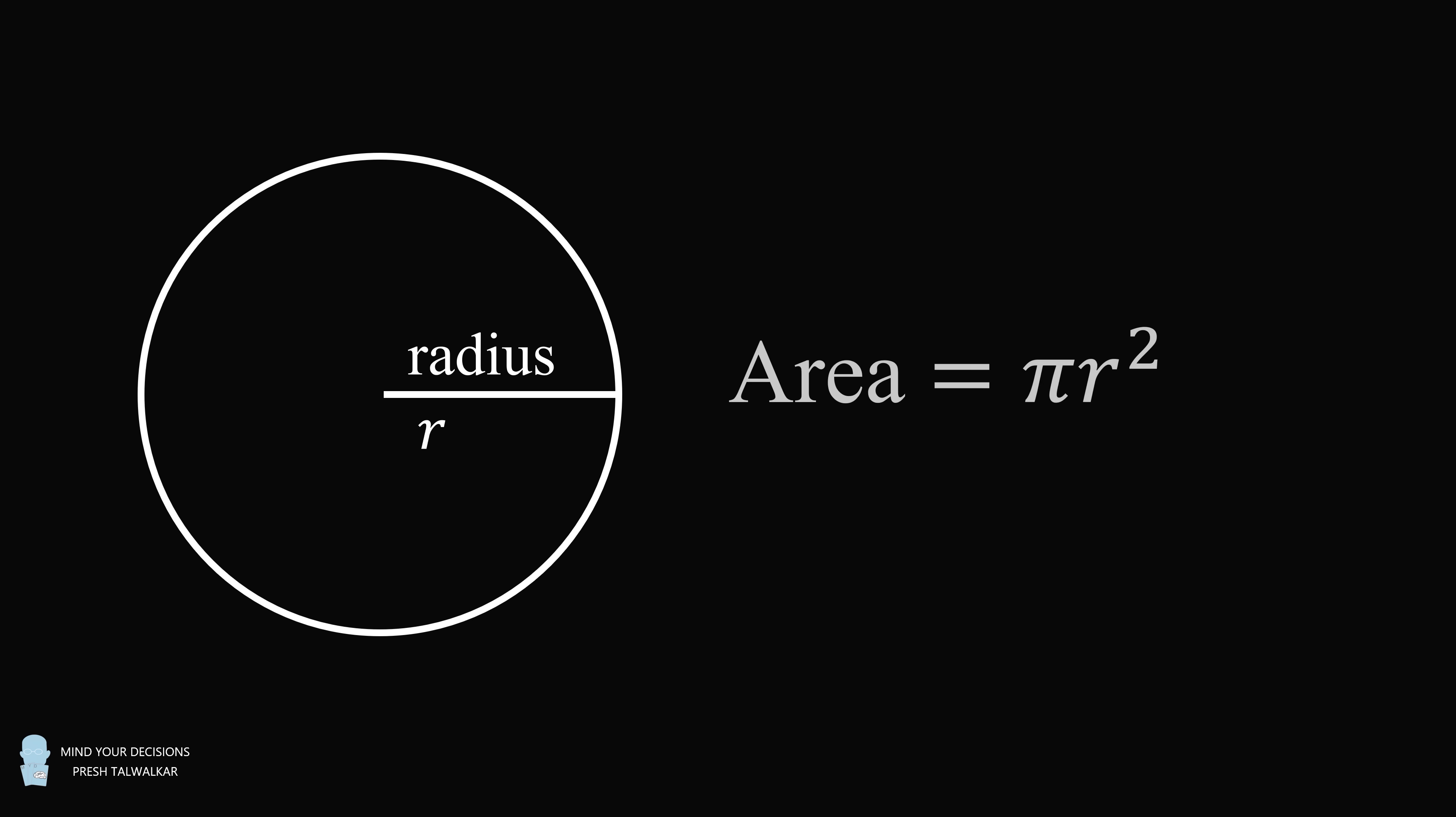Hey, this is Prashto-Walker. Here's a formula we all learn in school. A circle with radius r has an area equal to pi times r squared. But have you ever wondered where this formula comes from and how was it possible that ancient civilizations had an understanding of this formula?